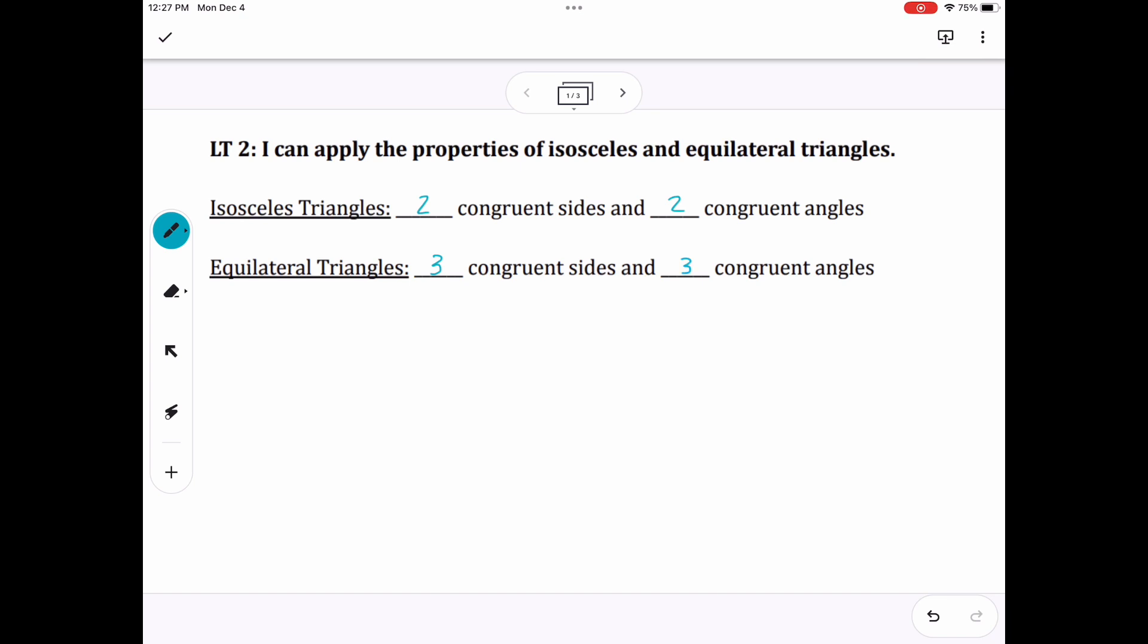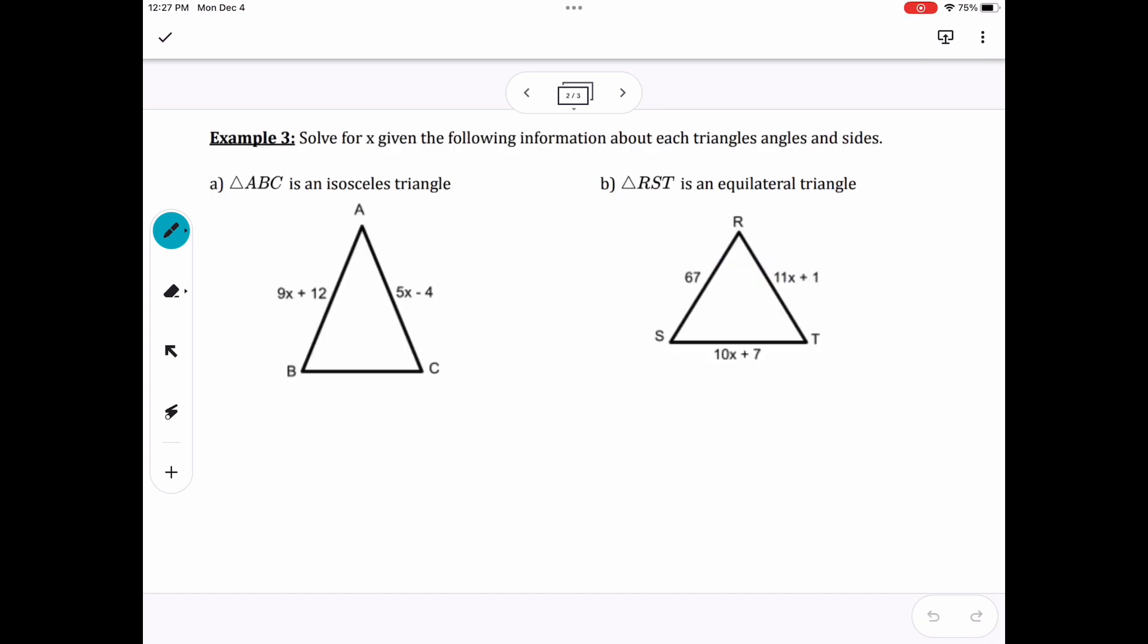So using those ideas, we want to be able to solve. We're going to solve for x. Given an isosceles triangle, those two sides, AB and AC, are equal to each other. So we're going to set them equal to each other and use that to solve for x.